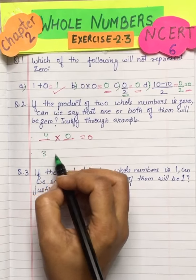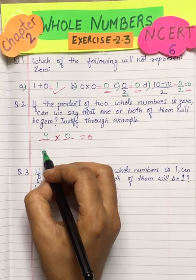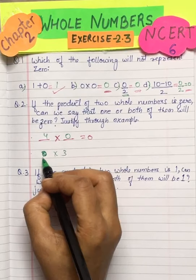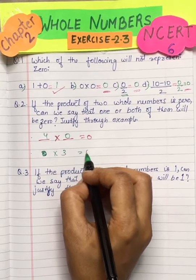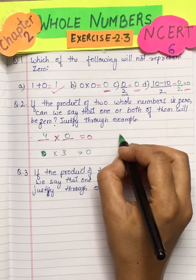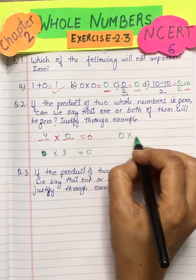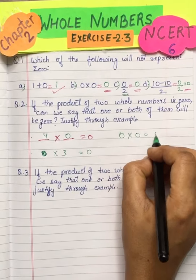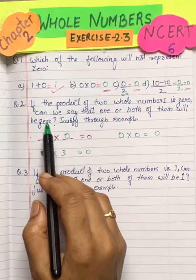If we have 3 here and keep 0 here, 0 multiplied by any number is again 0. And suppose both of them are 0, like 0 into 0, then again we get 0. So this statement is true.